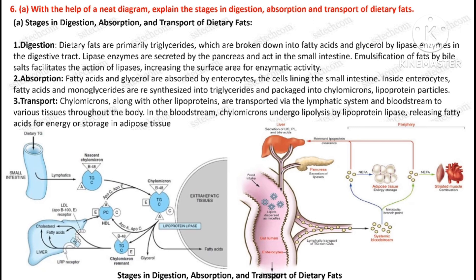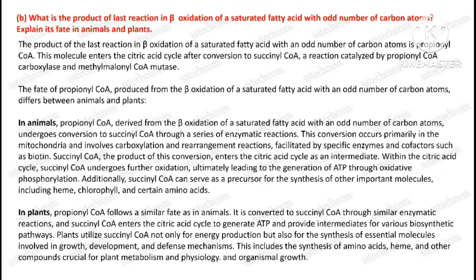Question number six, first part: With the help of a neat diagram, explain the stages in digestion, absorption, and transport of dietary fats. Second part: What is the product of the last reaction in beta oxidation of a saturated fatty acid with an odd number of carbon atoms? Explain its fate in animals and plants.